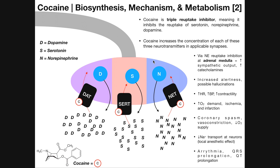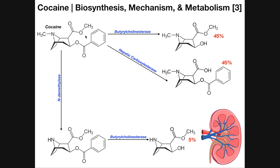Just understand that cocaine is a triple reuptake inhibitor, and all of its effects except for the sodium channel effects are pretty much mediated by the increased level of neurotransmitters in the synapses all over the body. Now, what happens if cocaine gets in your blood? You have to have a way to metabolize it and then eliminate it. The metabolism is done primarily through two enzymes. The first is a serum esterase called butyrylcholinesterase — a broad specificity esterase found free-floating in the blood as a plasma enzyme.